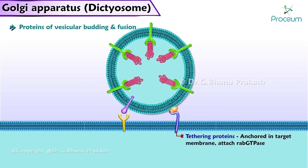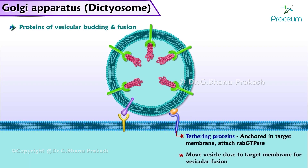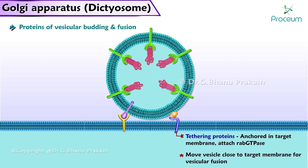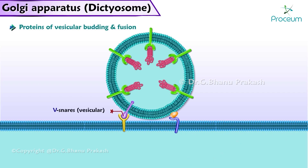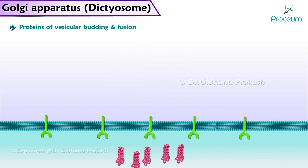These tethering proteins are anchored in the target membrane. They attach RAB-GTPase and then move close to the target membrane for vesicular fusion. The V-snares, or vesicular snares, and T-snares, or target membrane snares, play a role in vesicular fusion.